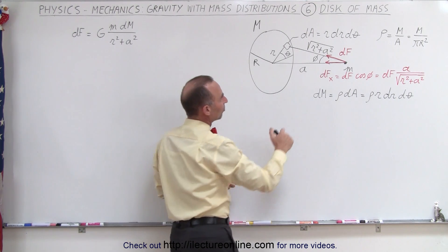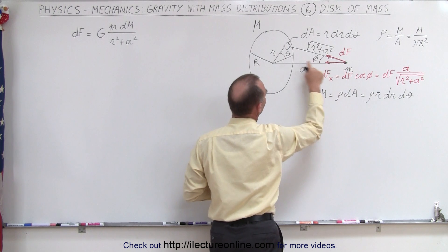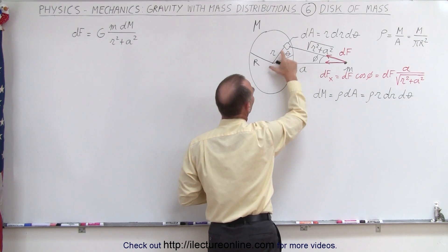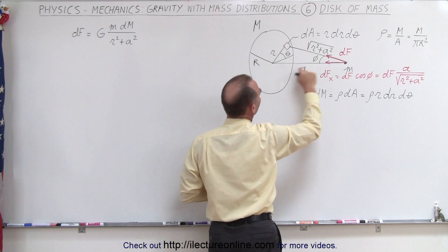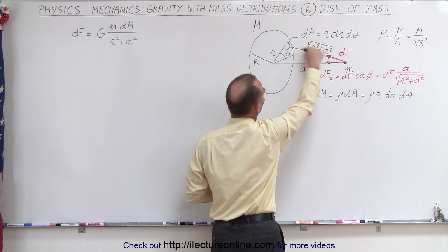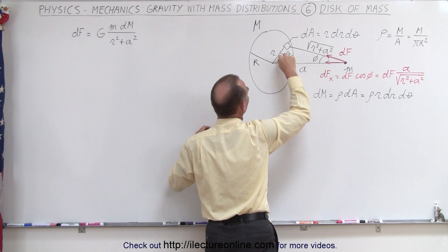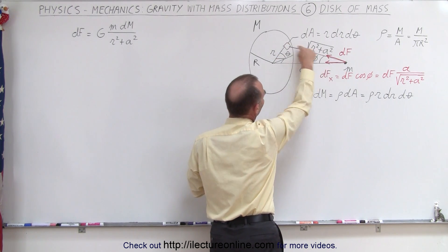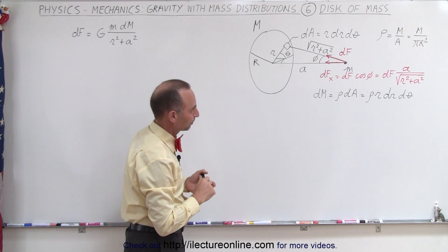Now if you take the geometry here from the mass to the center of the disc, let's call that distance A. Then the distance from the center to the area element is small r, and then this distance here — the hypotenuse, because this is a right angle — is the square root of r² plus A².